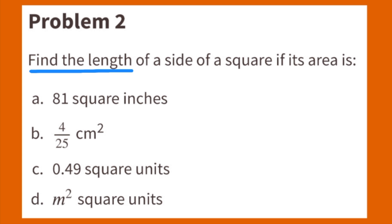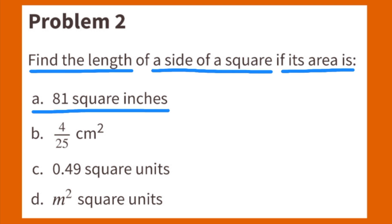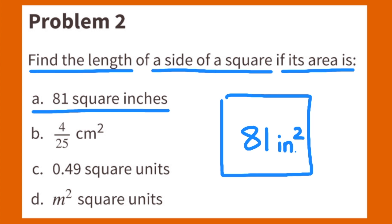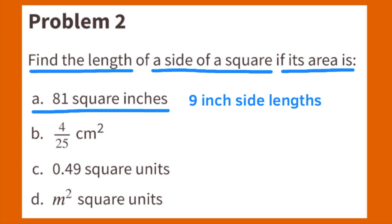Number 2: Find the length of the side of a square if its area is 81 square inches. Since the side lengths of squares are always equal, the length of one side times the length of the other side will always equal the square's area. 9 squared, or 9 times 9, is 81. Square A has 9-inch side lengths.